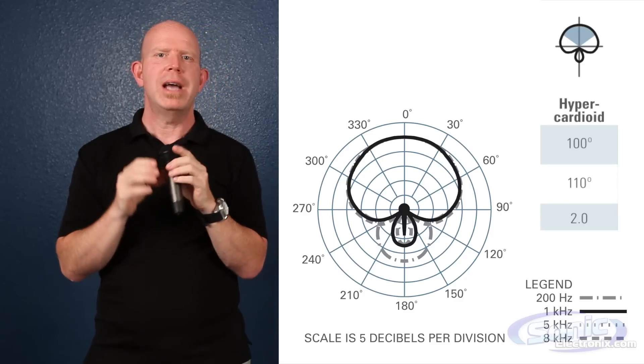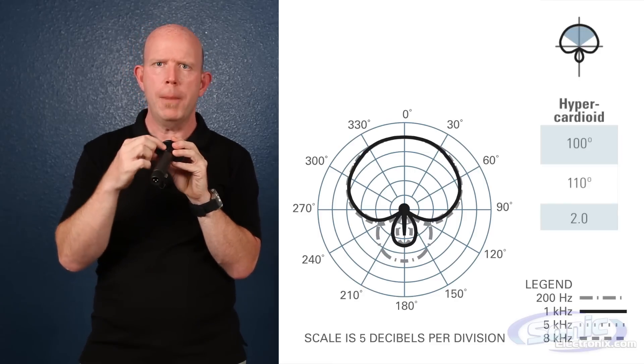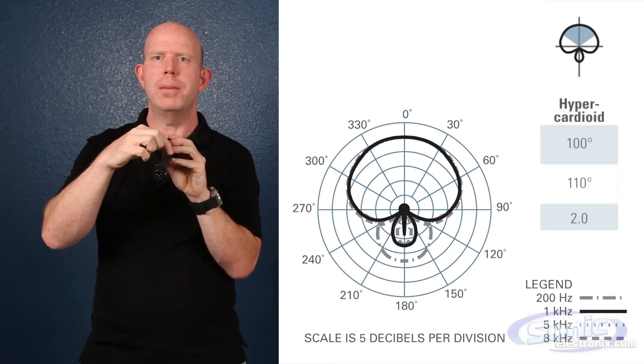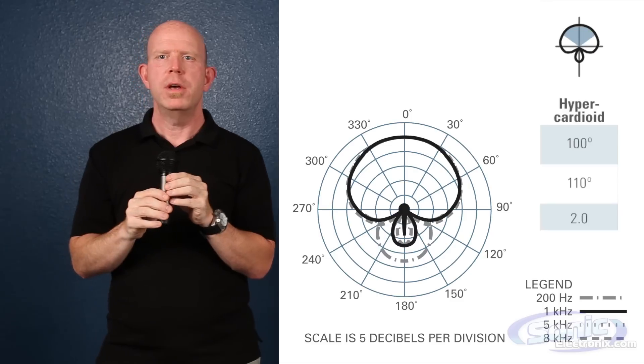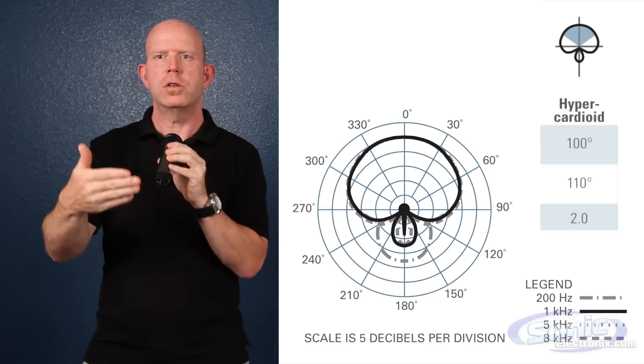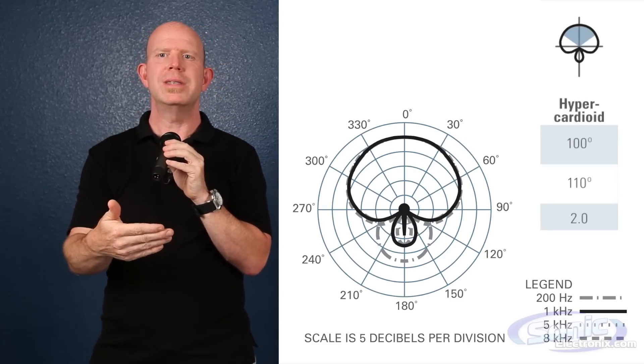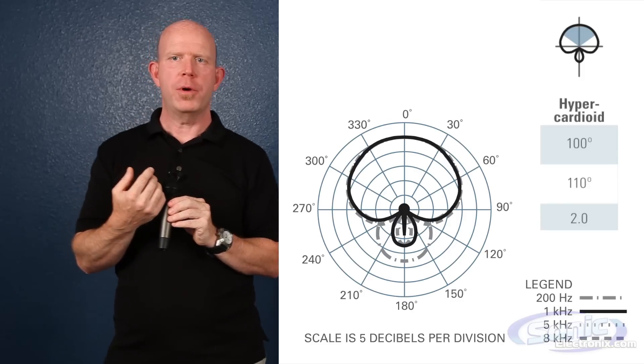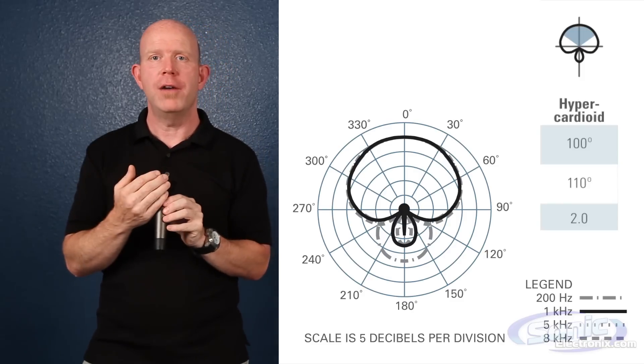To gain this tighter pattern, the mics will have a small lobe of pickup right here, right in the back. This is why you need to be familiar with your mics, because putting monitors directly behind a hypercardioid is not a good idea. The null point on a hypercardioid is 110 degrees off axis.